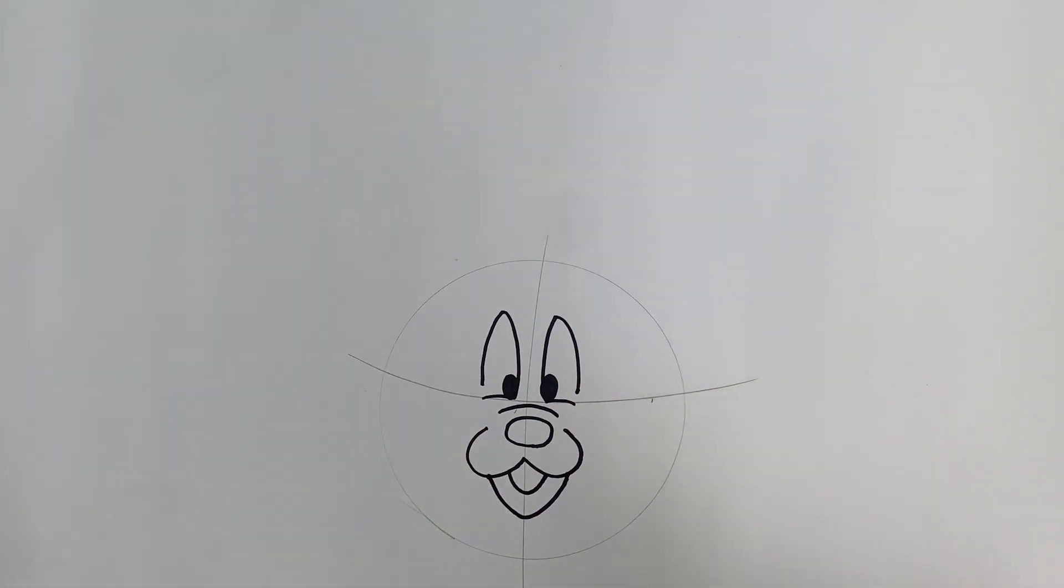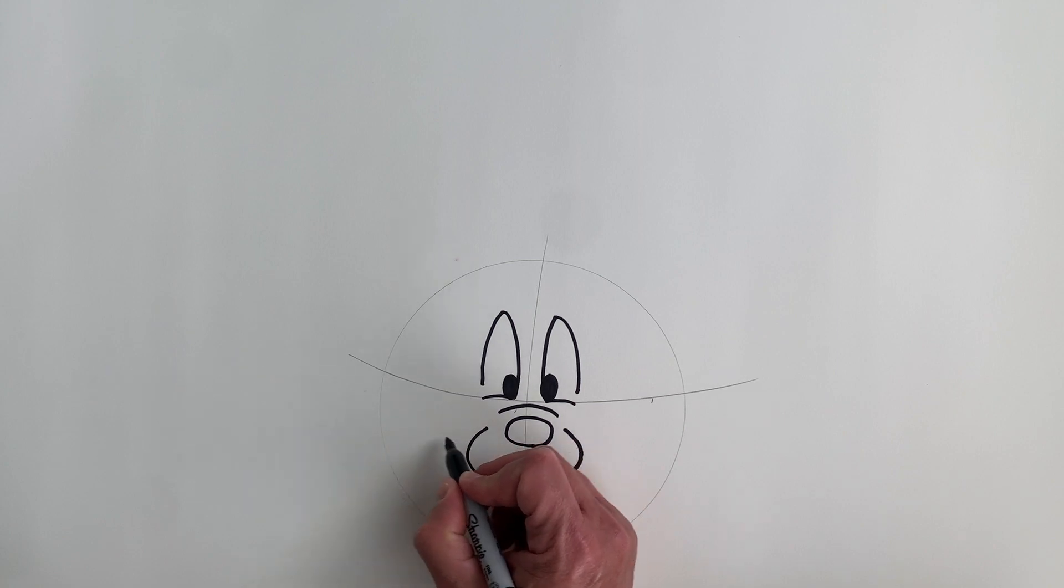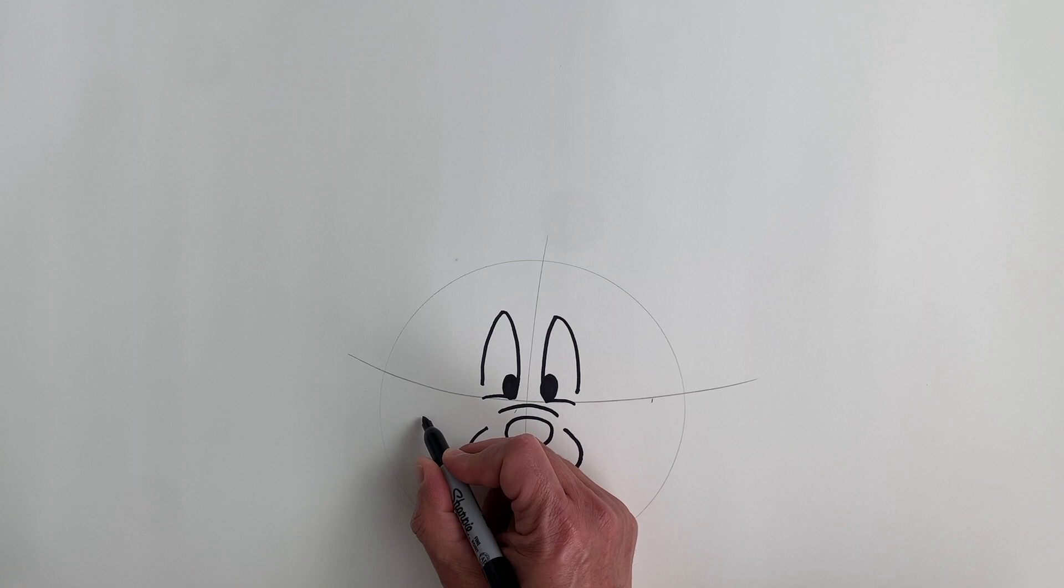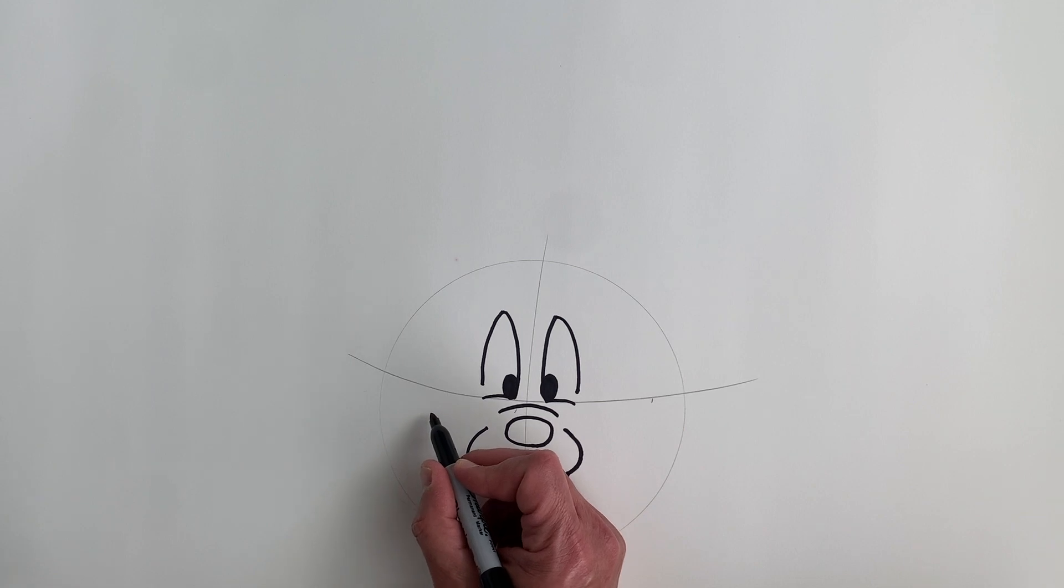All right, very good. Okay, to kind of give him a little smile, you're going to make a line from here to there. And you could start, let's start, let's start over here. Marker right around here. And join it like so.